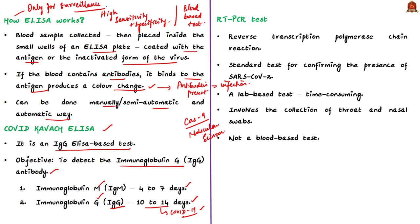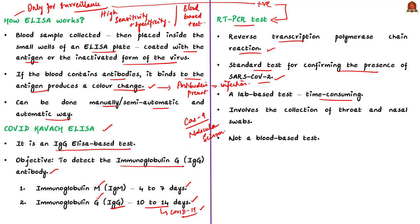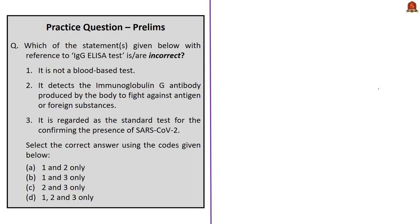If infected persons who test positive using the ELISA test are again tested with RT-PCR tests — RT-PCR stands for Reverse Transcription Polymerase Chain Reaction — these tests are considered the standard test for confirming the presence of SARS-CoV-2 virus. RT-PCR is a time-consuming, lab-based test that involves collection of throat swabs and nasal swabs, so it is not a blood-based test. Remember this difference: the ELISA test is used only for surveillance purposes, whereas RT-PCR is the confirmatory test for SARS-CoV-2 infection.